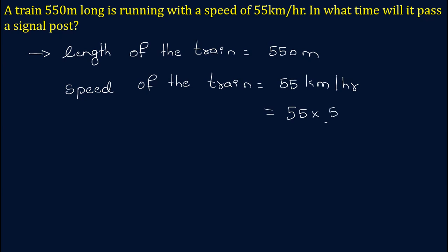So 55 times 5 by 18 meters per second. Now we have to find in what time will it pass a signal post - that is, we have to find the time. The formula to find